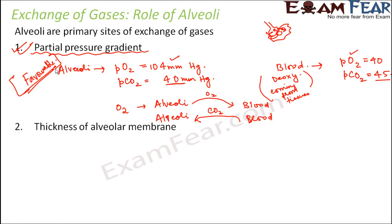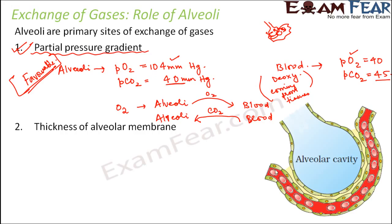The second factor is the thickness of the alveolar membrane. The membrane involved in diffusion here is the alveolar membrane. Looking closely, we have the alveolar cavity and the blood vessel immediately adjacent to it. The alveolar membrane is surrounded by one layer of epithelial cells, and very close to it is another layer of epithelial cells beyond which are the blood vessels — they are extremely close together.